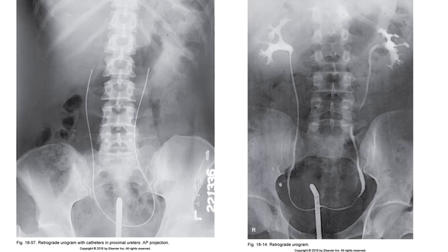Retrograde urography requires catheterization of the ureters, usually done by a urologist with the patient under anesthesia. Contrast is injected directly into the pelvic calyceal system and provides improved opacification of the renal collecting system. Little physiologic information is provided, and this study may be indicated for evaluation of collecting systems in patients with renal insufficiency or contrast sensitivity, since this method does not require injection into the bloodstream. Retrograde urography is classified as an operative procedure carried out under aseptic conditions. The image on the left shows the catheters in place bilaterally in the ureters, and on the right we see the full contrast injection. Notice how the renal parenchyma does not highlight for retrograde studies as the contrast is injected outside of the bloodstream.